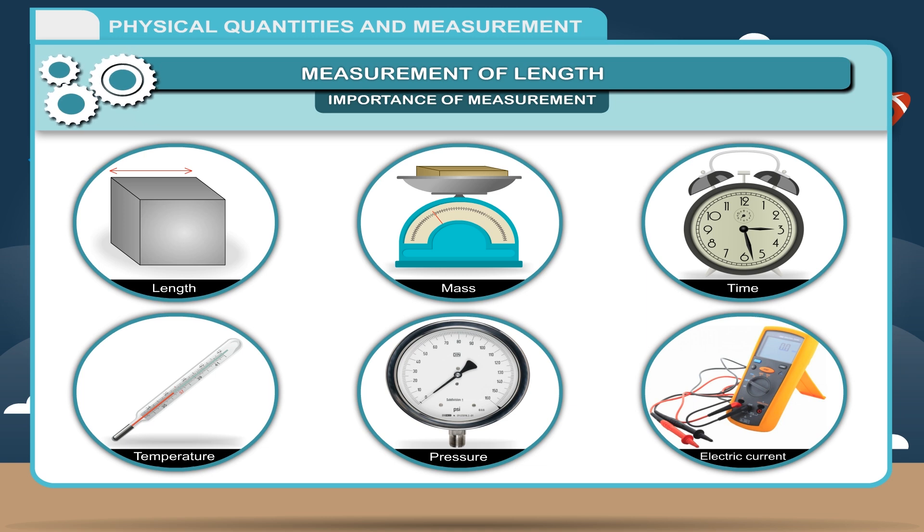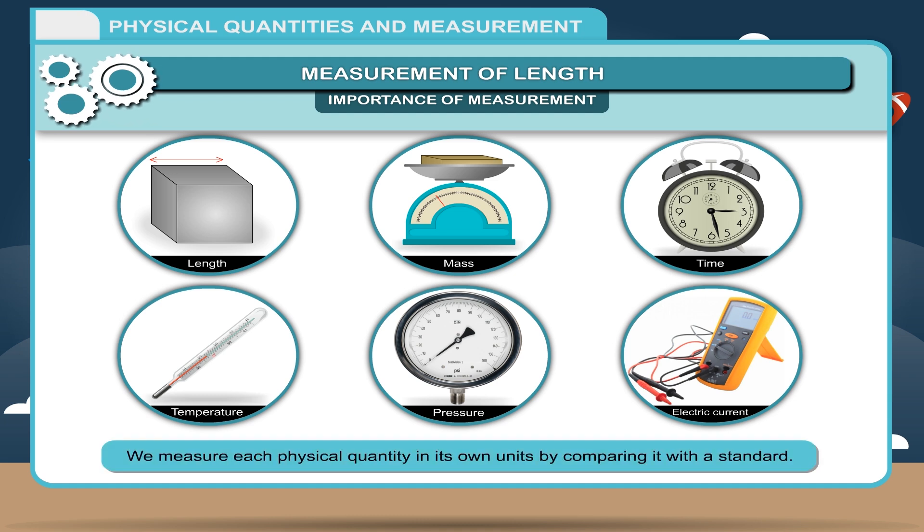Anything which is measurable is called a physical quantity. We measure each physical quantity in its own units by comparing it with a standard. Without measurement, we cannot make the correct judgment about length, area, volume, etc. An arbitrary estimate gives us wrong information about the dimensions of an object.